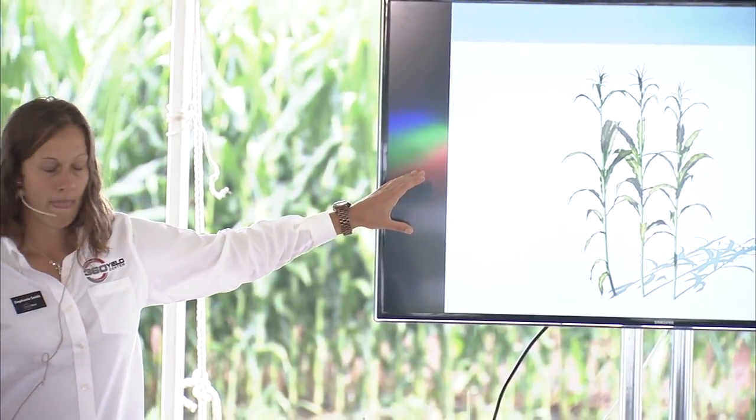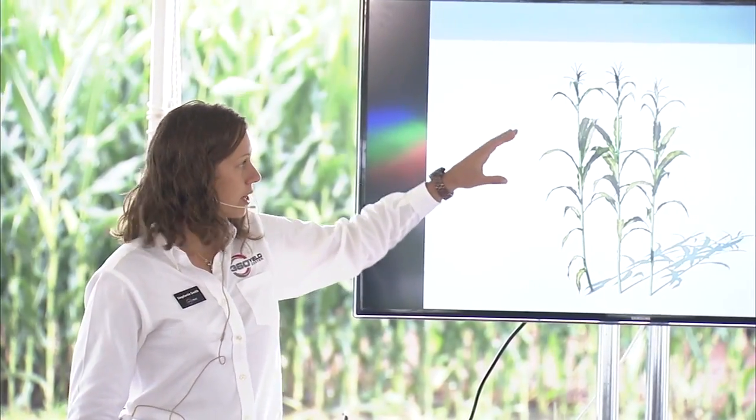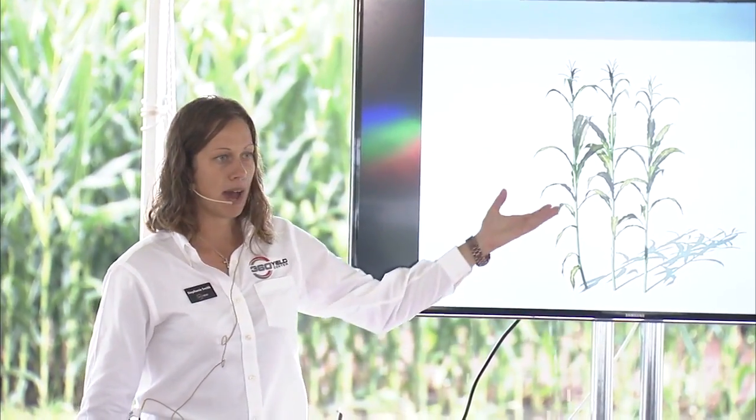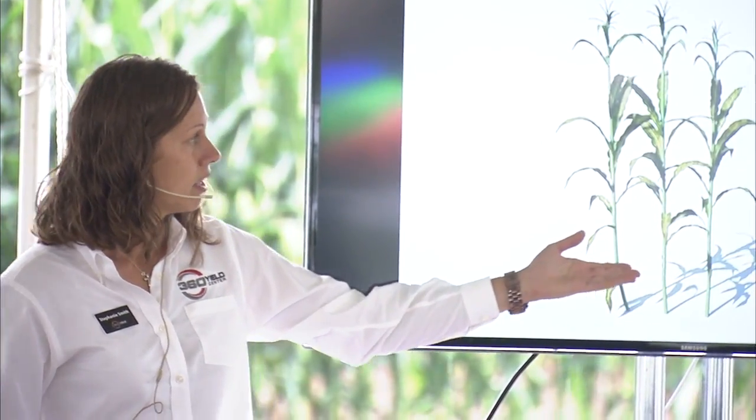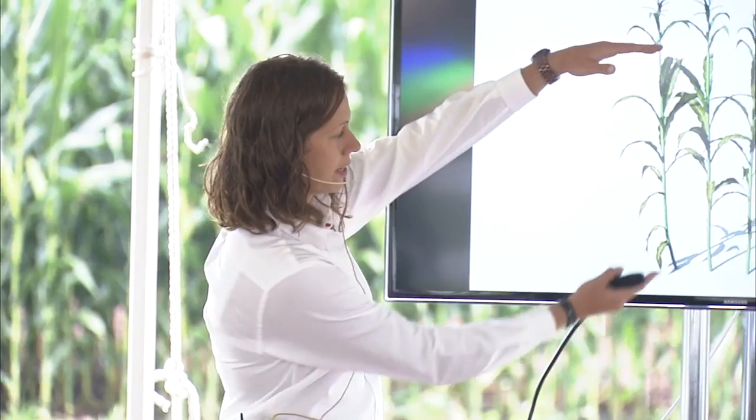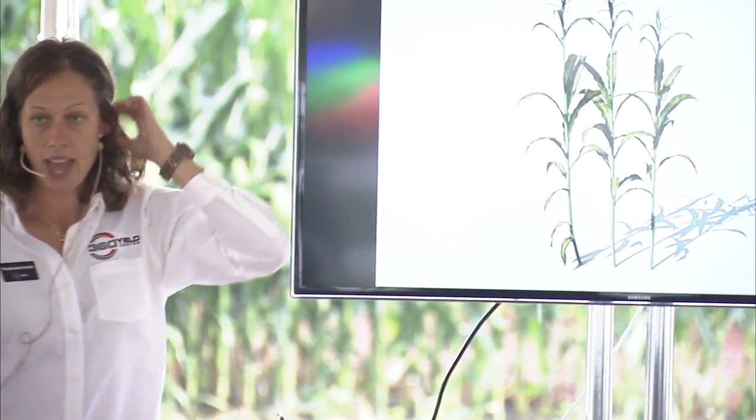Think of the diseases that wreak havoc on a corn plant. I mentioned gray leaf spot — is that a top-down or bottom-up disease? It's a bottom-up disease. We're coming out of residue, coming out of soil. Northern corn leaf blight, for those who have seen it, is a top-down disease. Rust — also top-down. So we have two locations in the plant where that pathogen comes in to rob us of yield. The question is, how do we best control it?